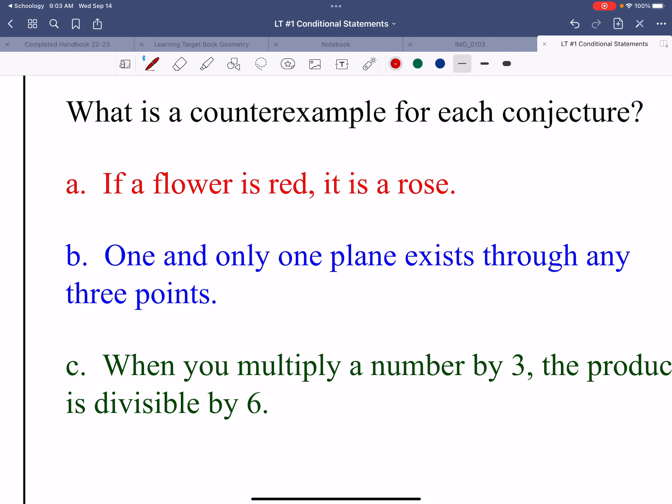If a flower is red, then it is a rose. Well, not all flowers that are red are roses. For example, a tulip is a flower, but it's not a rose, and it's red.